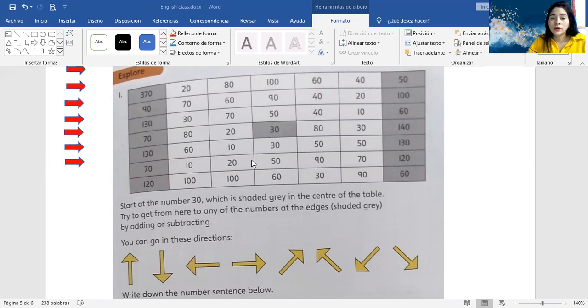So here, in this point, you have to read carefully. Start at the number 30. This is the number 30, which is shaded gray, shaded with gray in the center of the table.